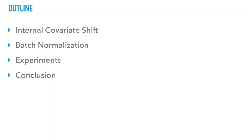In this video, I will firstly introduce what internal covariate shifts are. Then I will introduce batch normalization and how it reduces internal covariate shifts. After that, I will show some experiment results, and at last, I will conclude the paper in one slide.